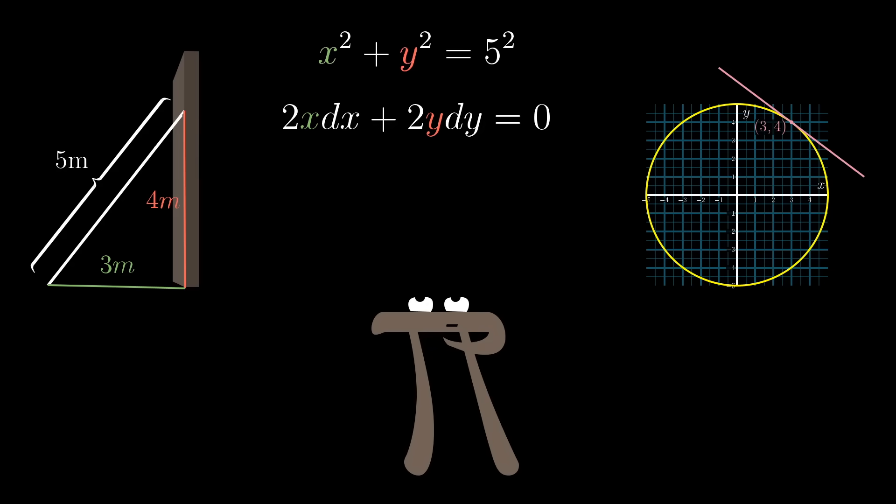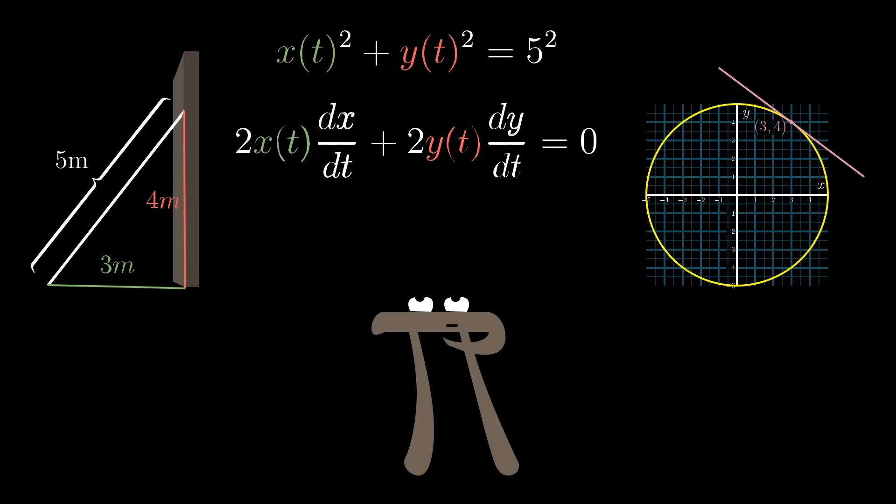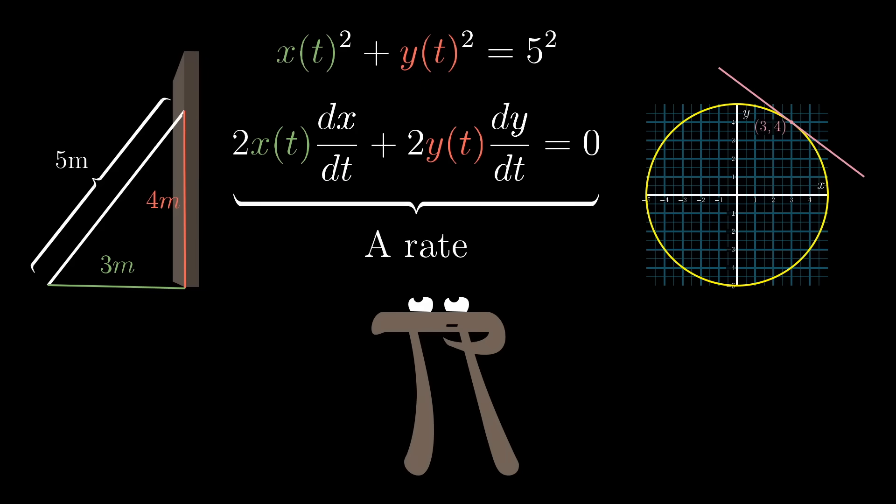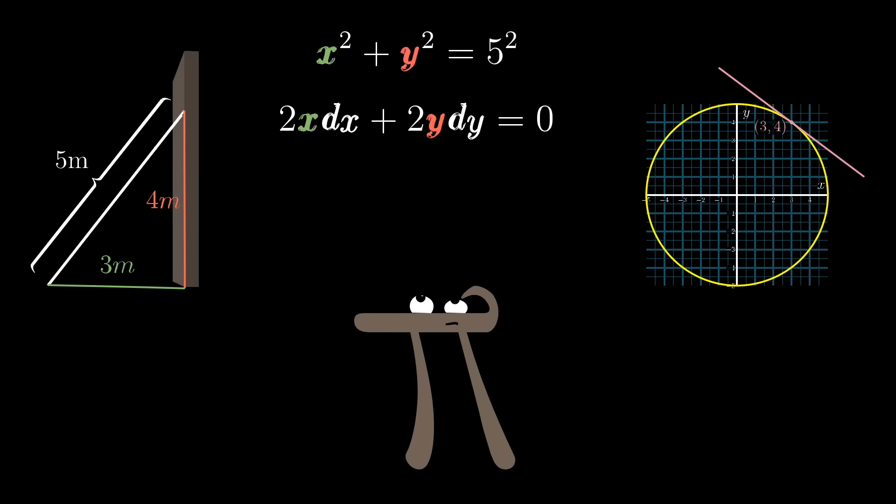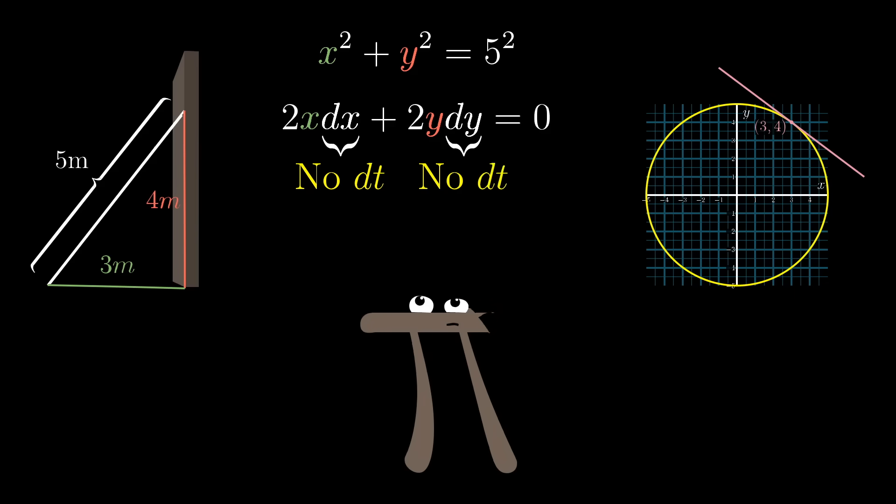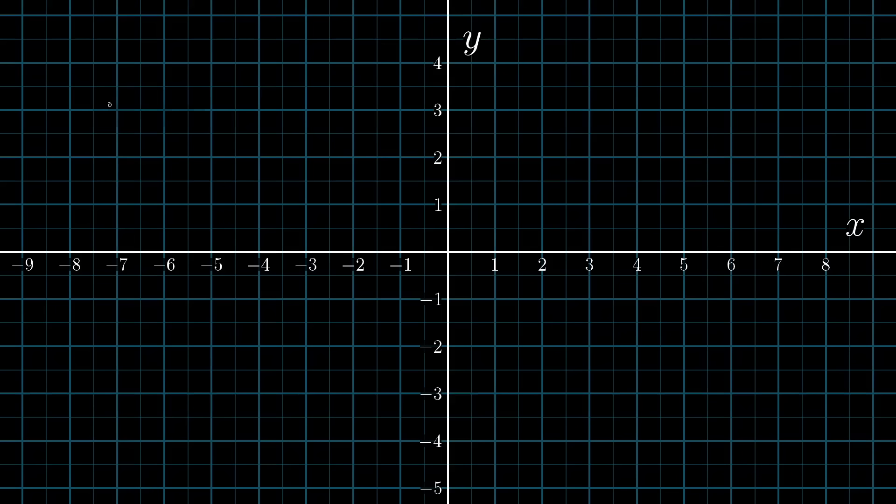But for the ladder question, these expressions were functions of time, so taking the derivative has a clear meaning. It's the rate at which the expression changes as time changes. But what makes the circle situation strange is that rather than saying that a small amount of time dt has passed, which causes x and y to change, the derivative just has these tiny nudges dx and dy just floating free, not tied to some other common variable like time.